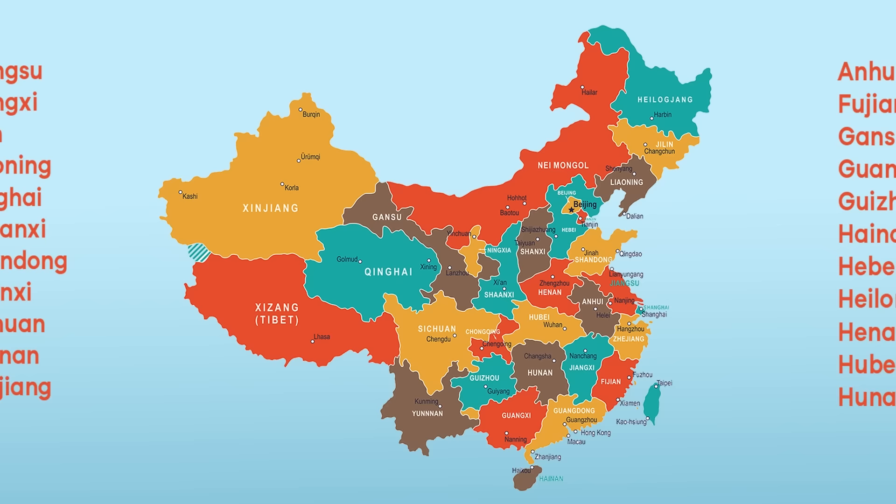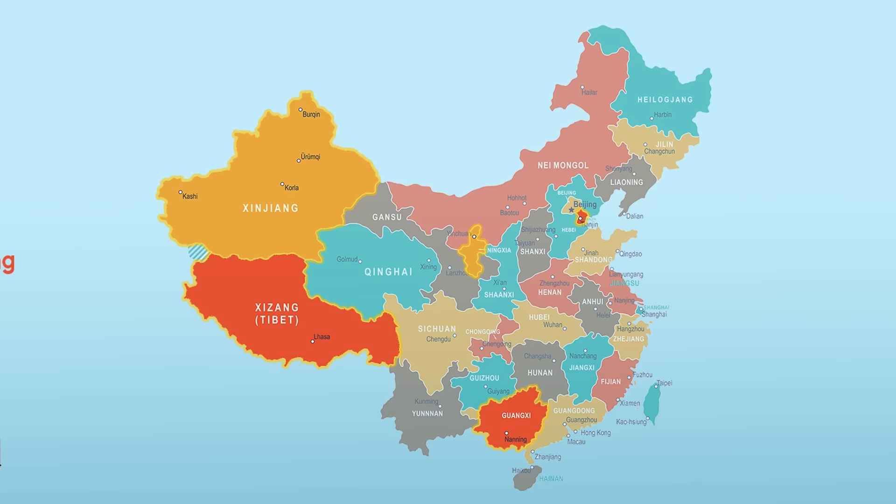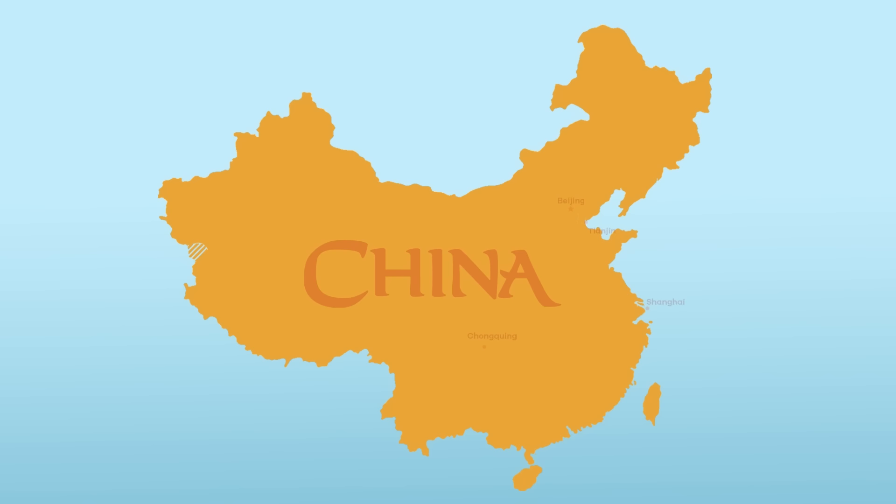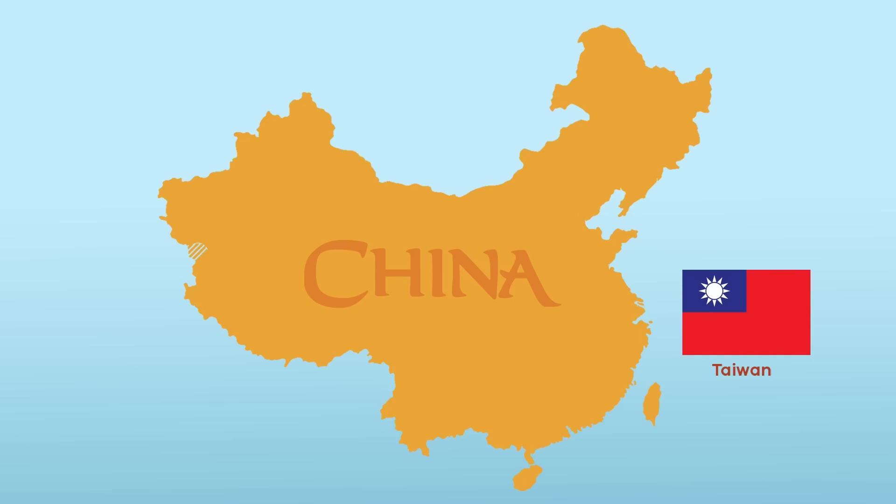China divides its land into 33 administrative units. These units include 22 provinces, five self-governed regions, four municipalities — which are basically like big cities — and two special administrative regions, Hong Kong and Macau. Though once under Chinese control, the island of Taiwan has been under separate leadership since 1949.